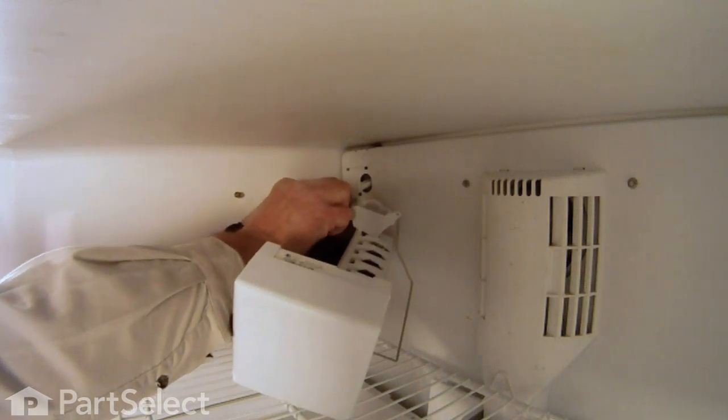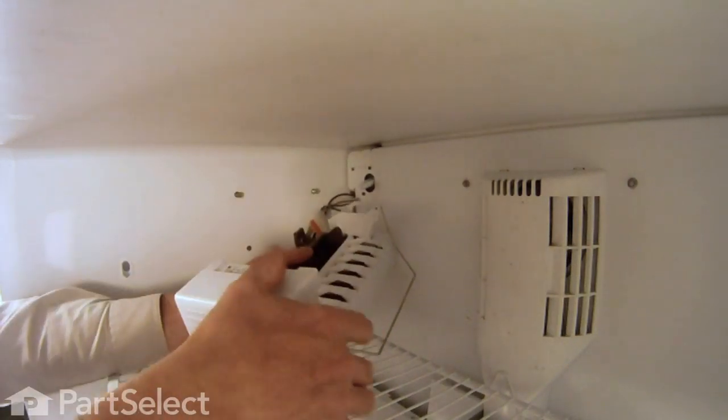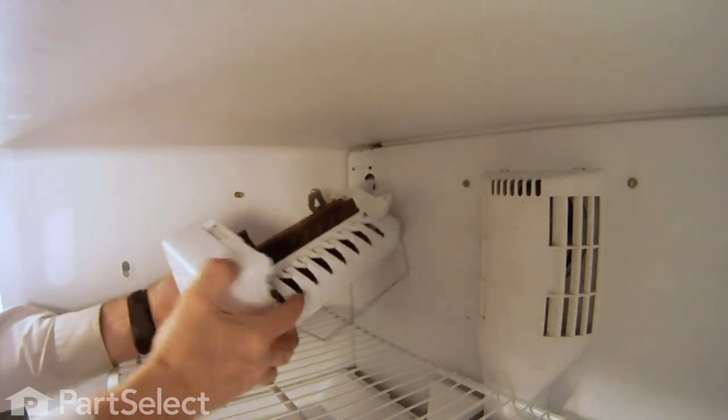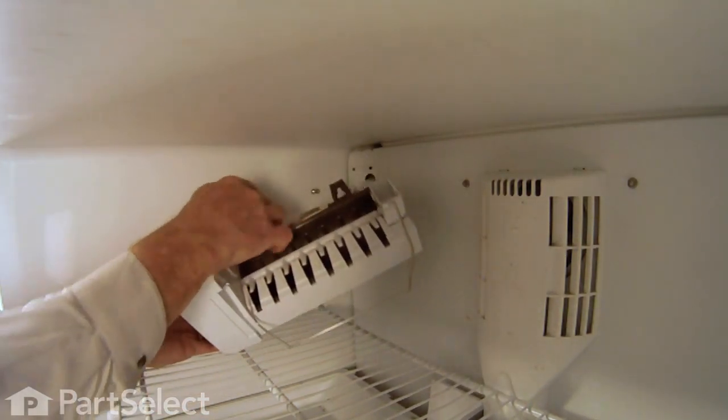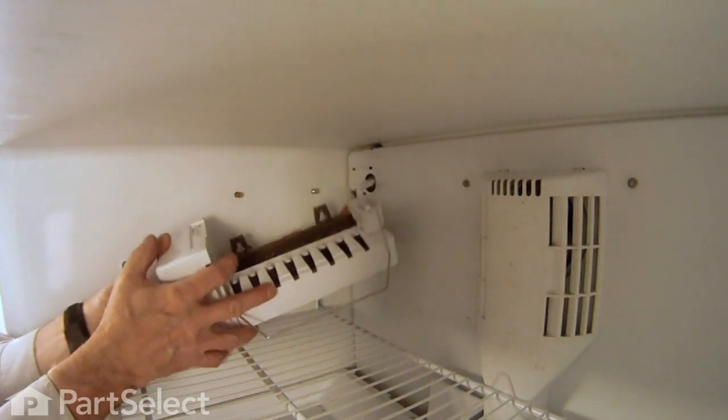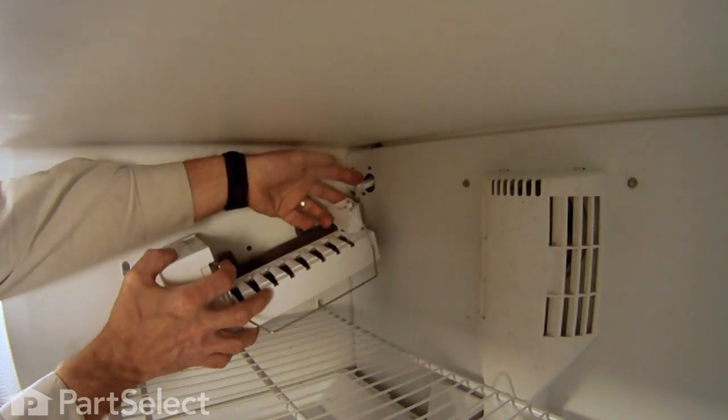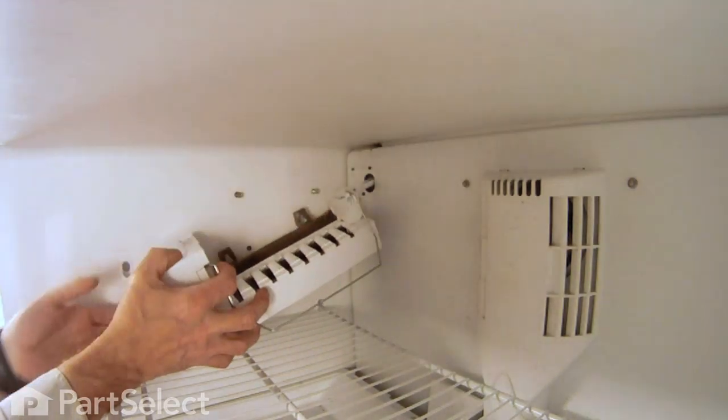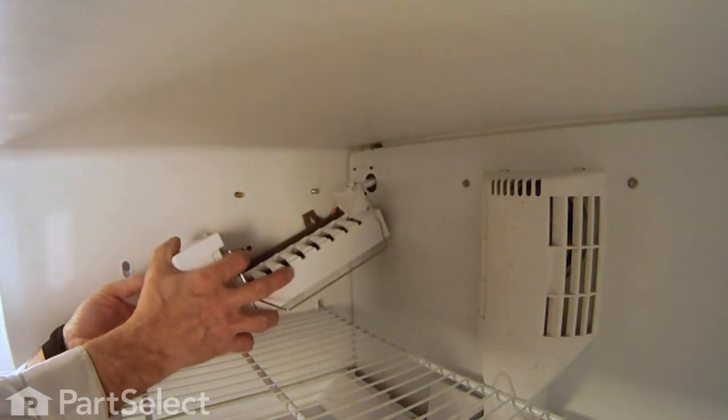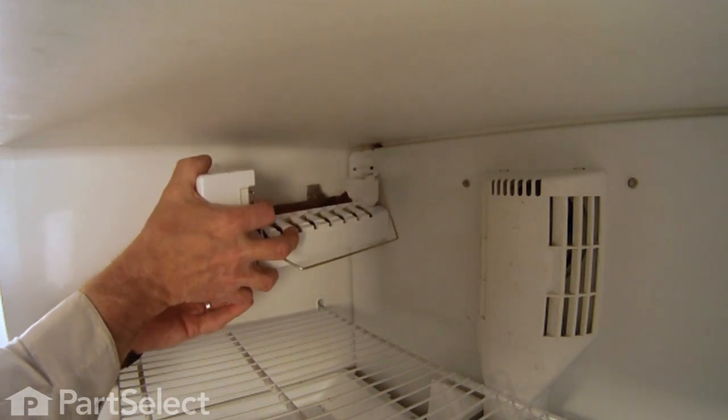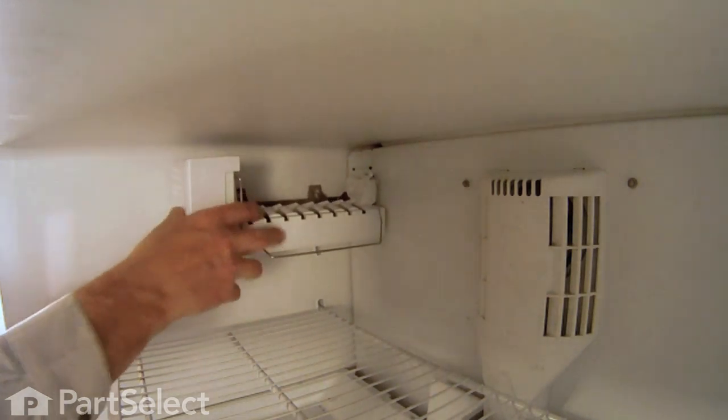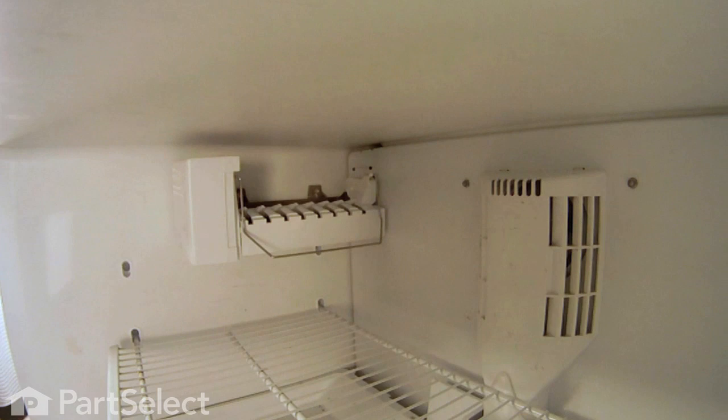Then we're going to lift the ice maker into position and hang these two support brackets over the two screws that we've installed on the side. First we'll make sure that we line up that fill tube with the cup at the back of the ice maker, make sure it fits into that opening, and then hang the ice maker in place and tighten those two screws.